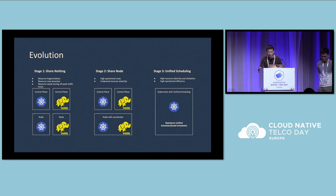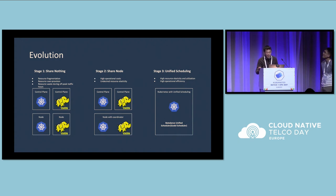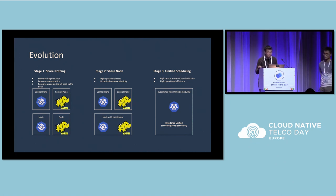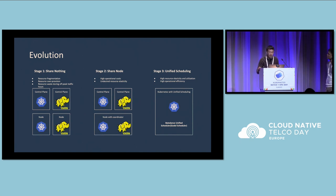So last year, we moved to stage three. We used Kubernetes to manage all of our resources — no more Hadoop YARN. Since the default scheduler did not meet our requirements, we developed the ByteDance unified scheduler, which we also call the Godel scheduler. We also kept the coordinators as co-located agents. In this stage, we achieved high resource elasticity and utilization, and we also improved our operation efficiency.